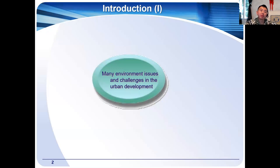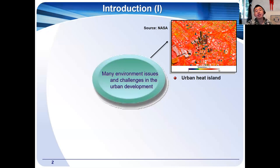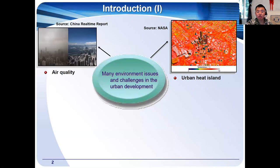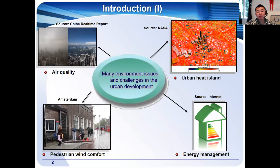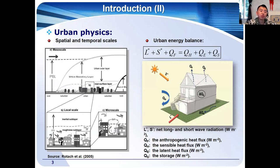It would be best to start by looking at the background. Urban modification to the local climate manifests in a variety of forms. Urban buildings affect the wind, temperature, and turbulent fields. The most prominent feature is the well-known urban heat island. Other serious issues in urban development include air quality problems, energy consumption in buildings, and discomfort or even danger for inhabitants due to high wind velocity at pedestrian levels.